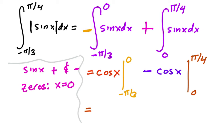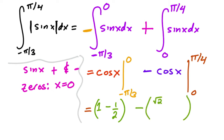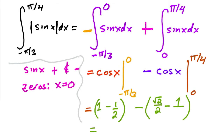Plugging in: cosine of zero equals one, minus cosine of negative pi over three, which is one half — that's the first part. Then minus cosine of pi over four, which is root two over two, minus cosine of zero, which is one. So this gives one plus one equals two, then minus one, giving three minus root two, all over two.